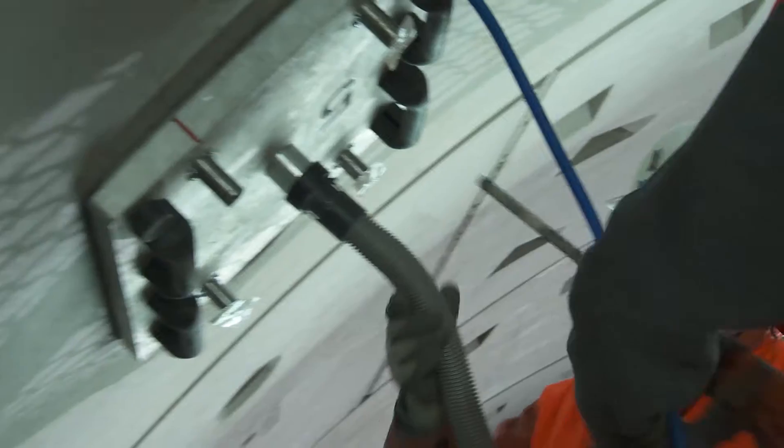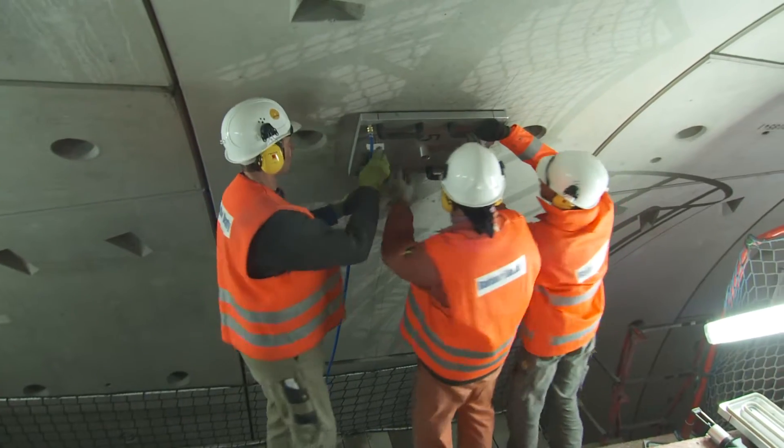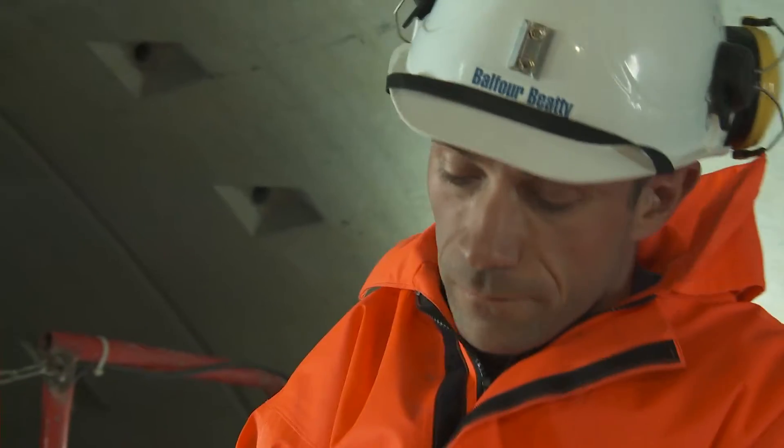Depending on which component of the overhead contact line needs to be fixed to the tunnel segment, the fitters attach a certain number of anchors that create a so-called drilling image. For each drilling image there is a template, nine in all.